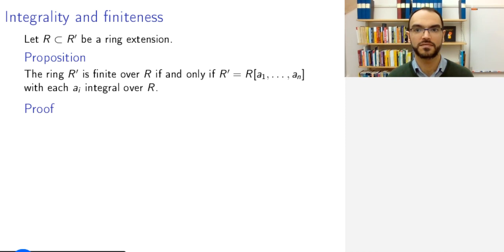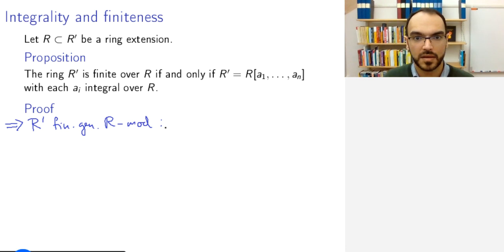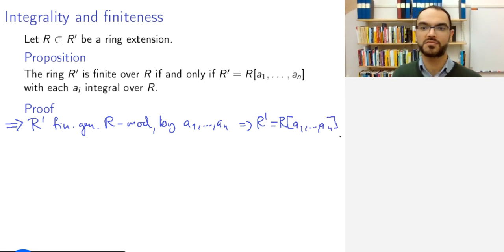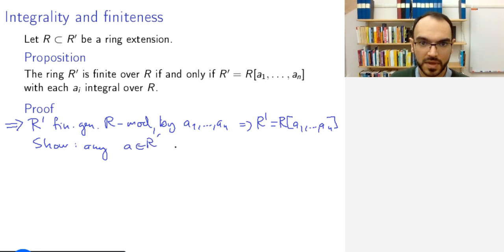But okay, let's go to the proof of this proposition. So let us start in this direction. So assume that R' is finite. So it's finitely generated as an R-module. And assume it's generated by a_1 to a_n. If it's already generated as an R-module by these elements, then it is generated by them as an R-algebra.